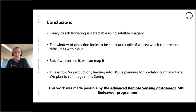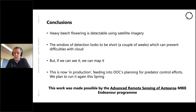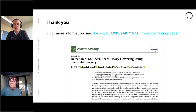Conclusions: heavy beech flowering is detectable using satellite imagery. The window of detection is short and cloud can present difficulties, but if we can see it, we can map it. This work is now in production and feeds into DOC's planning for predator control efforts — we're planning to run it again this spring. DOC don't solely rely on this map; it's part of a suite of data including the delta T method and field reports, because you can't really beat ground data. This work was also made possible by the Advanced Remote Sensing of Aotearoa MBIE Endeavour programme. It's based on a paper published last year available at the URLs shown.